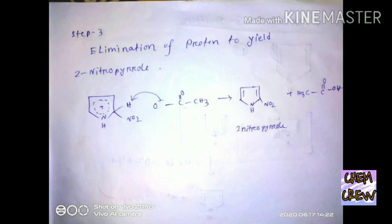On the other hand, 2-nitropyrrole is formed. In the same way, sulfonation occurs where an SO3H group is added instead of an NO2 group. Thanks for watching.